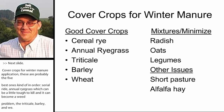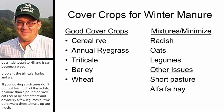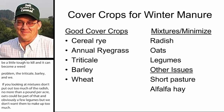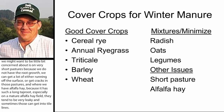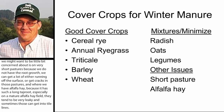One concern is with very short pastures, because we don't have the root growth there. We can get a lot of nutrients running off the surface or even moving through preferential flow — we can get cracks in those pastures. It's all about root growth. Where we have alfalfa hay, because it has such a long taproot, especially on a mature alfalfa hay field, they tend to be very leaky and can sometimes get into the tile line. You have to pick your cover crops carefully to avoid some of these issues. Cover crops can really help us by adding extra organic matter and tying up some of these soluble nutrients.